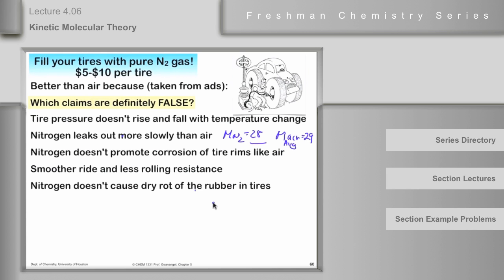In summary, those three claims are bogus according to kinetic molecular theory analysis. The molar mass of air is a weighted average — 79% N₂, 21% O₂, and about 1% CO₂ — so you can calculate the weighted average molar mass, which works out to somewhere between 29 and 30 grams per mole.